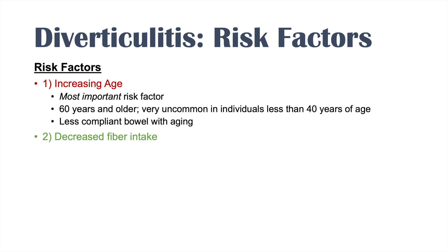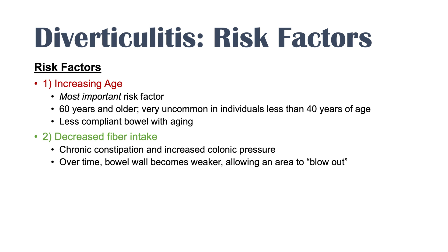The second risk factor is decreased fiber intake. Individuals with a very low fiber diet generally have increased constipation, and over the course of their life, chronic constipation can lead to increased colonic pressure. That increased colonic pressure can lead to a less compliant bowel, with diverticula popping out in areas of weakness in the bowel wall. Eventually, an area in the bowel wall can blow out, forming a diverticulum.